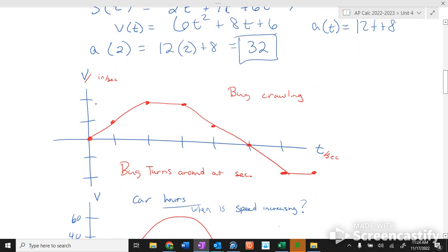Here's a bug crawling, and this is a velocity versus time graph. The bug was going zero, then 1 inch per second, then 2 inches per second, then it's still going 2 inches per second, then 1 inch per second, then 0 inches per second. Then how fast is it going here? That's the path of the bug. When does the bug turn around?